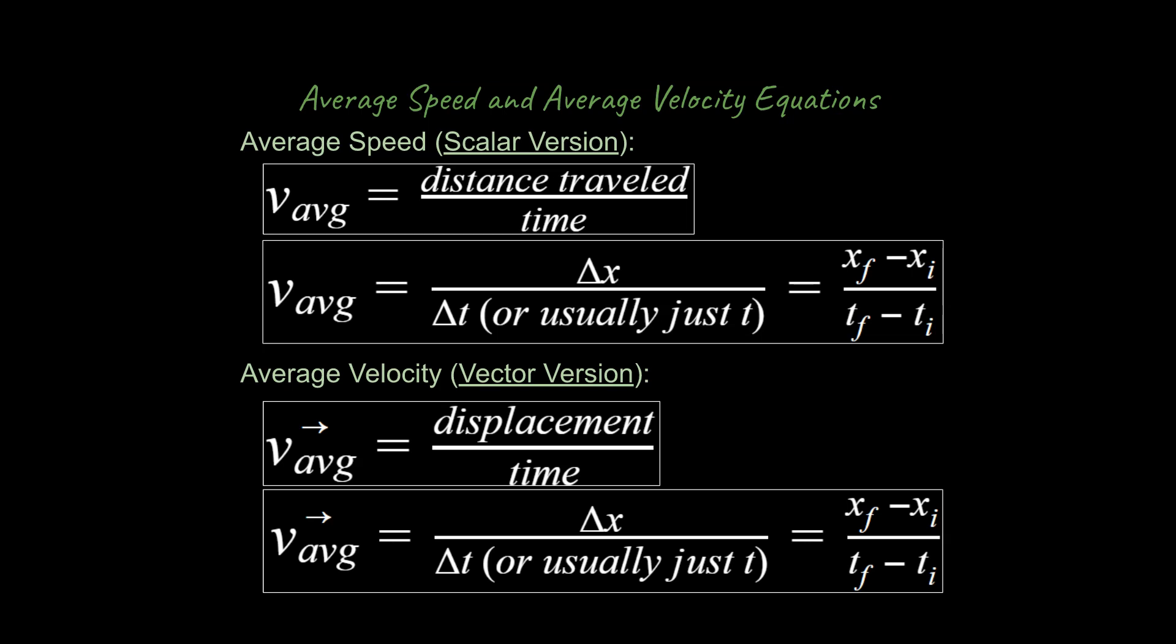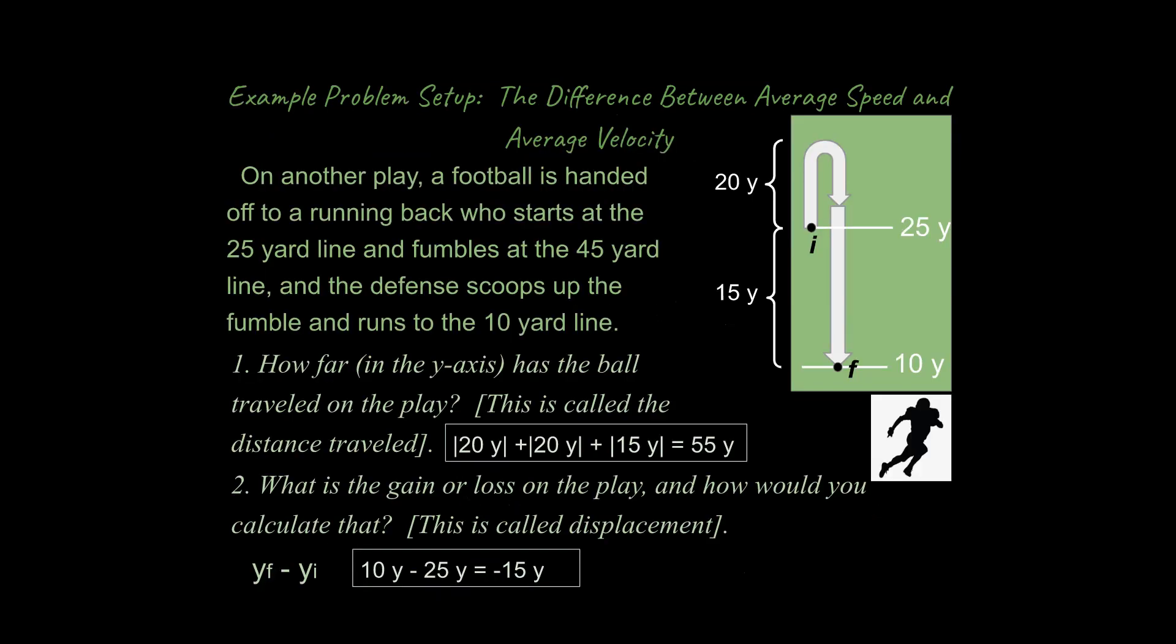So let's build on some of the work we've done previously in terms of understanding what the difference is between distance traveled and displacement. So I've given a football analogy, a football problem that I made up earlier in my previous screencast on distance traveled versus displacement. And just as a quick recap, you have a football play where the ball travels forward 20 yards backwards to the line of scrimmage and all the way back to the 10-yard line over here.